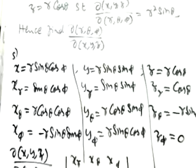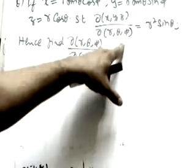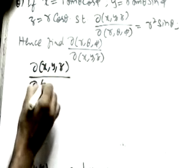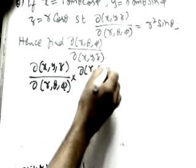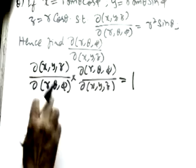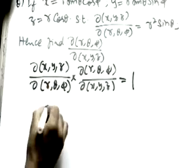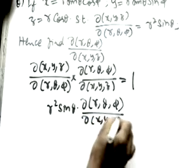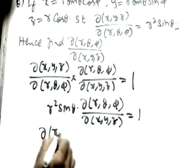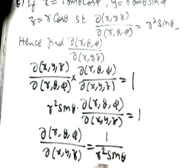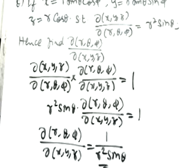Since J × J' = 1, we have ∂(x,y,z)/∂(r,θ,φ) × ∂(r,θ,φ)/∂(x,y,z) = 1. We just proved ∂(x,y,z)/∂(r,θ,φ) = r² sinθ, so substituting: r² sinθ × ∂(r,θ,φ)/∂(x,y,z) = 1, giving ∂(r,θ,φ)/∂(x,y,z) = 1/(r² sinθ) = cosecθ/r². Today we covered a few Jacobian questions; in the next class we continue with more.